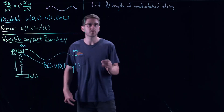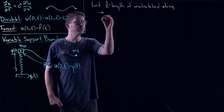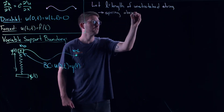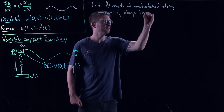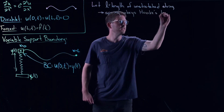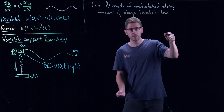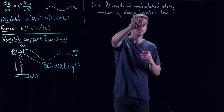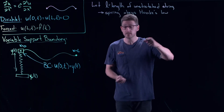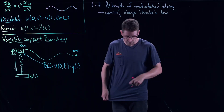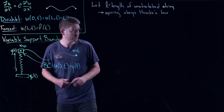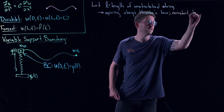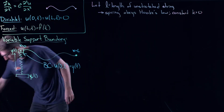Let's make some assumptions. We're going to assume the spring obeys Hooke's Law. Hooke's Law says that the more you stretch the spring, the more resistance that will be applied. In particular, the force of resistance is proportional to how much the spring is stretched, with a spring constant k > 0 — that's the stretchiness of the spring.